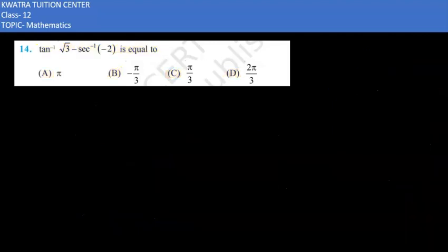When we simplify this further, we will get here 2 pi by 3 minus pi.